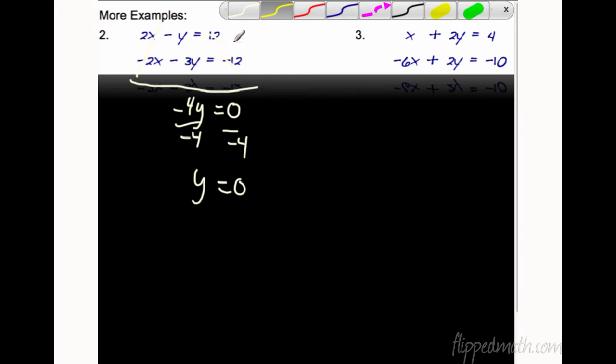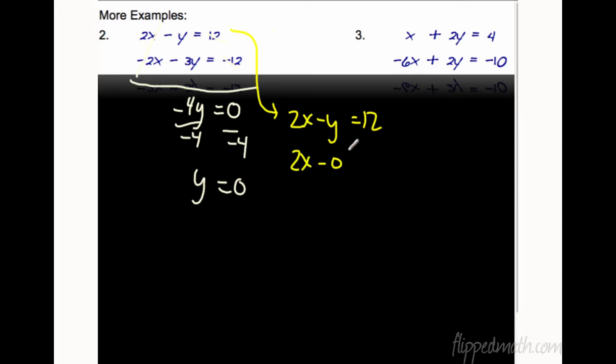Now we have to solve for the other variable. So pick an equation. Eeny, meeny, miny, moe. I'm going to pick this one. 2X minus Y equals 12. It doesn't matter which one you pick. But we do know now that Y equals zero. So 2X minus zero. We're going to put that zero right in for Y equals 12. 2X is going to equal 12, or X equals 6. So guess what? What's our point? Is it zero six? No, it's 6, zero. Because remember, the X always goes first and the Y always goes second.